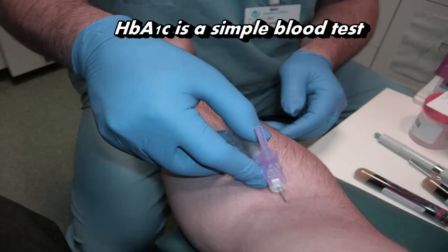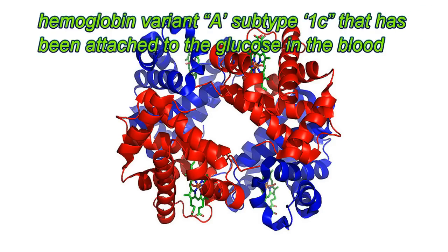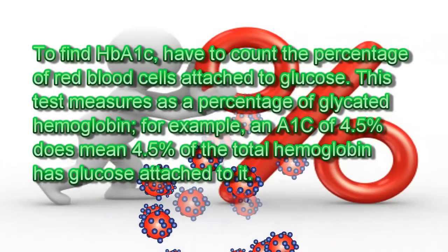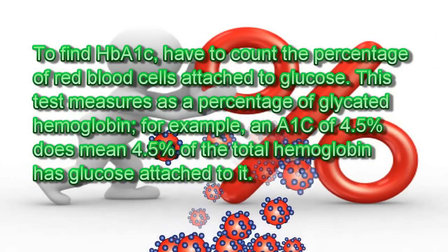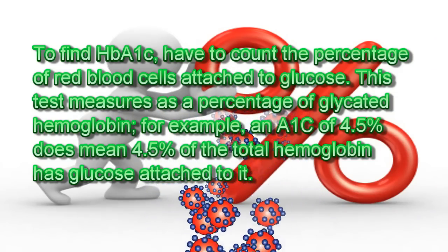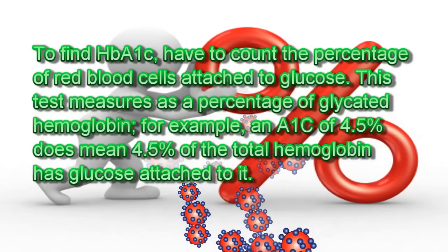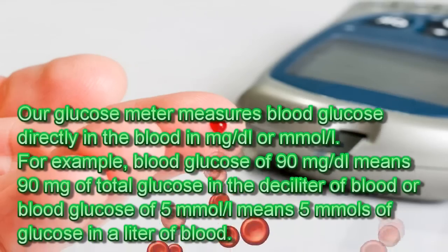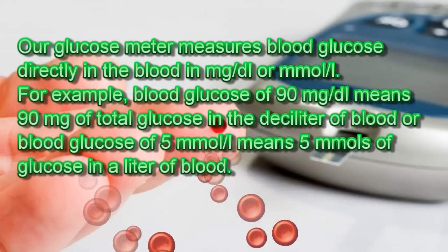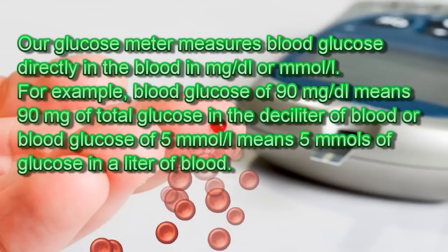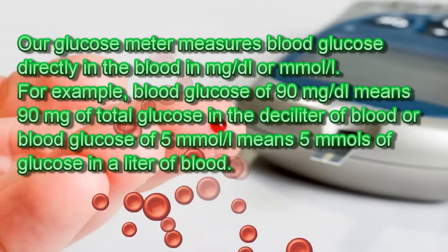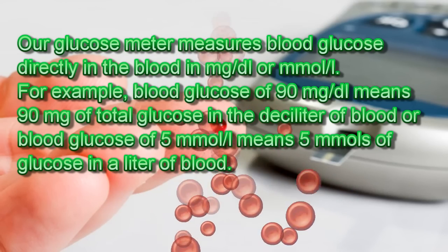HbA1c is a simple blood test that measures the percentage of hemoglobin variant A subtype 1c that has been attached to the glucose in the blood. To find HbA1c, you count the percentage of red blood cells attached to glucose. This test measures as a percentage of glycated hemoglobin. For example, an A1c of 4.5% means 4.5% of the total hemoglobin has glucose attached to it. A glucose meter measures blood glucose directly in mg per deciliter or mmol/liter — for example, 90 mg/dL or 5 mmol/L.